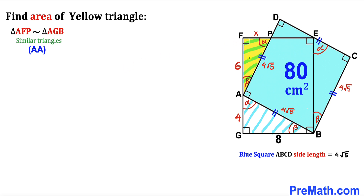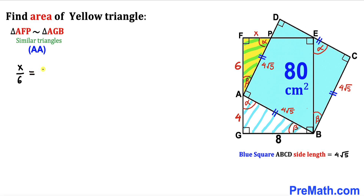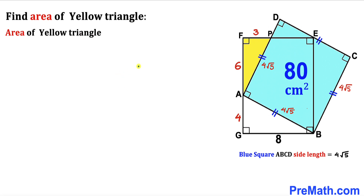Now focusing on triangles AFP and AGB, these two right triangles are also similar by the Angle-Angle similarity theorem. Setting up the proportion: X / 6 = 4 / 8. Multiplying both sides by 6: X = 3 centimeters. So side length FP is 3 centimeters.